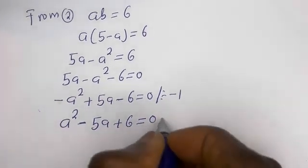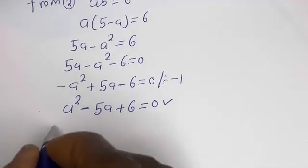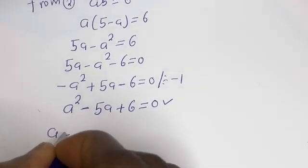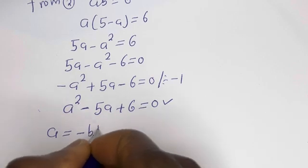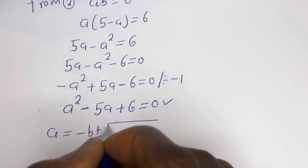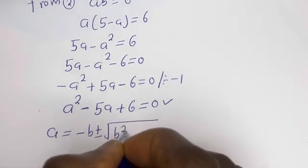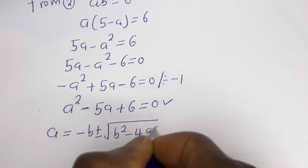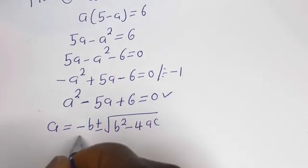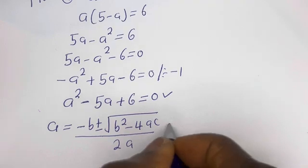This is a quadratic equation. Let's solve this using the quadratic general formula: a is equal to minus b plus or minus square root of b squared minus 4ac, all over 2a.